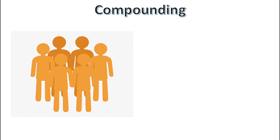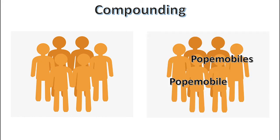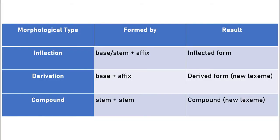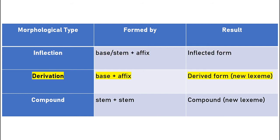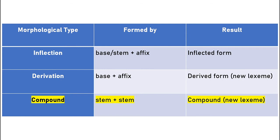Like derivation, compounding results in the formation of a new lexeme that contains its various inflected forms, like Popemobile and the plural Popemobiles. Compounds are formed from two stems, which distinguishes them from derivations and inflections. In inflection, a base or stem plus an affix leads to a new inflected form. In derivation, a base plus an affix leads to a derived form, which is also a new lexeme. And in compounding, two stems form a compound, which is also a new lexeme.